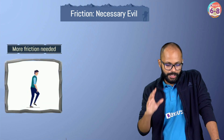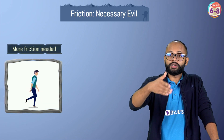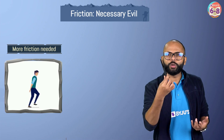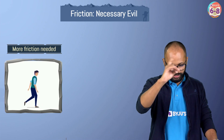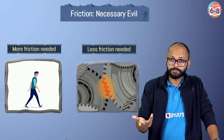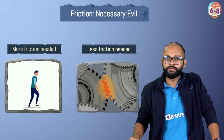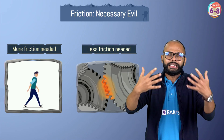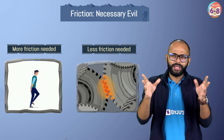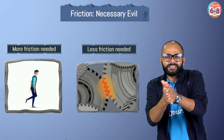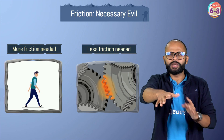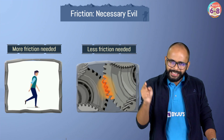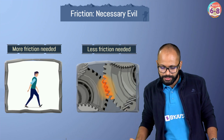Sometimes we need more friction because we want to walk. If friction was not there, I wouldn't be able to hold this pen or walk. But what happens because of friction? Machines and parts get wear and tear and you have to replace them. Tires get worn and treads get slippery - this is all because of friction.